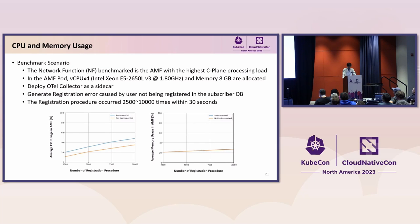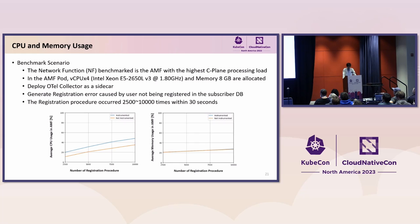We also examined the OpenTelemetry CPU and memory overheads by loading the AMF. The AMF is the most loaded network function in the processing of the control plane in the core network. The AMF pod is allocated 4 CPUs and memory in this scenario. An OpenTelemetry collector is deployed as a sidecar with no processors configured. The test makes registration fail multiple times from multiple user equipments. The results showed that while CPU utilization was affected to some extent, memory utilization was almost unaffected by the instrumentation. Sampling is being explored to further reduce CPU utilization.